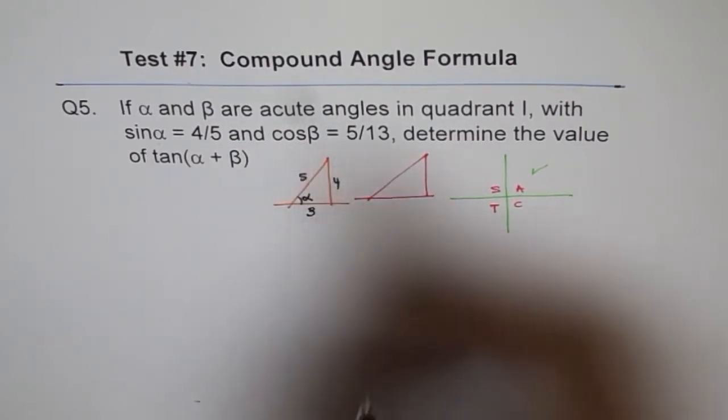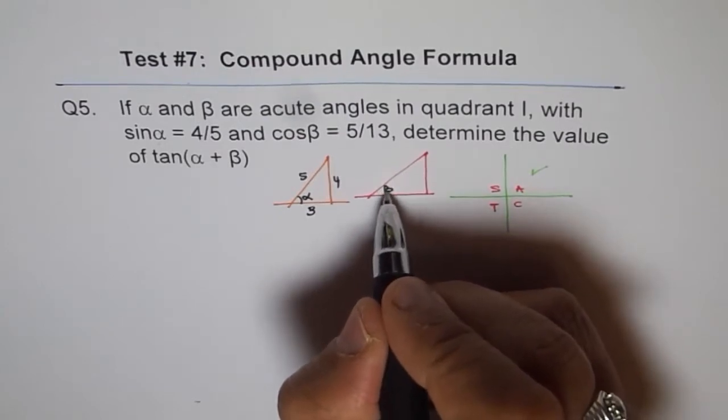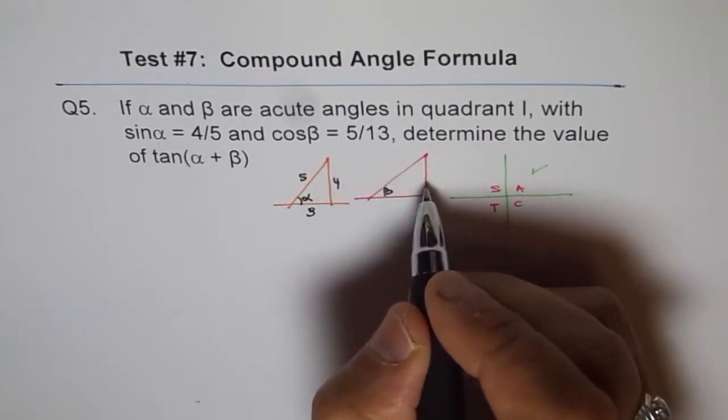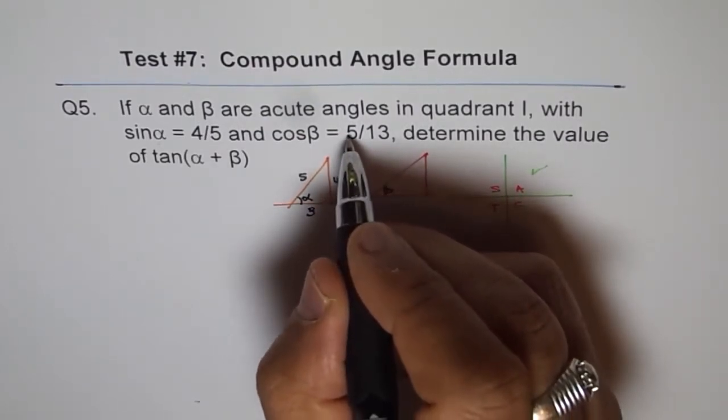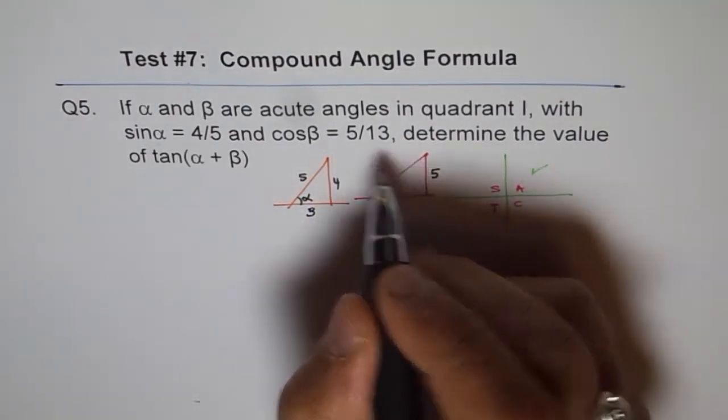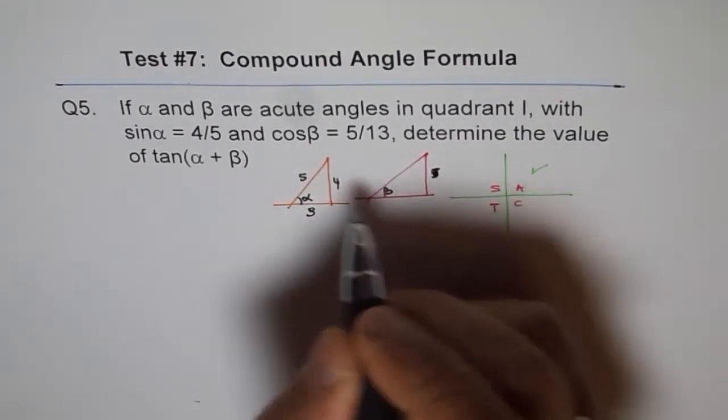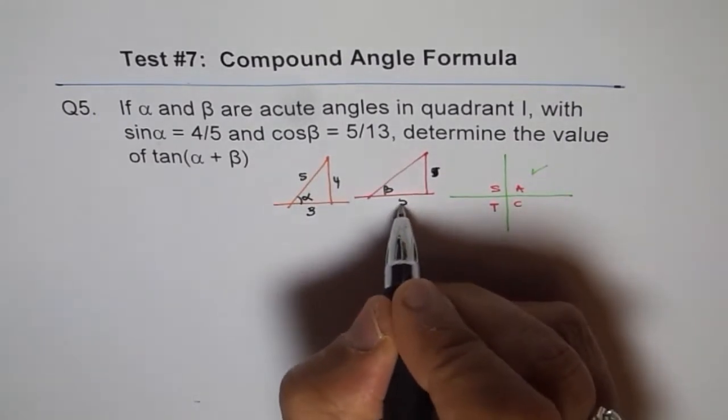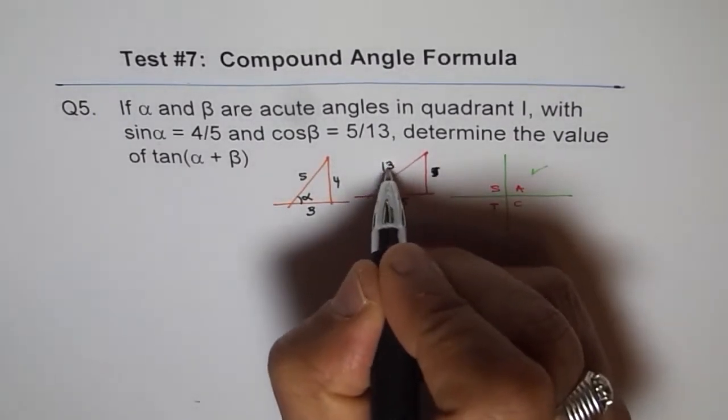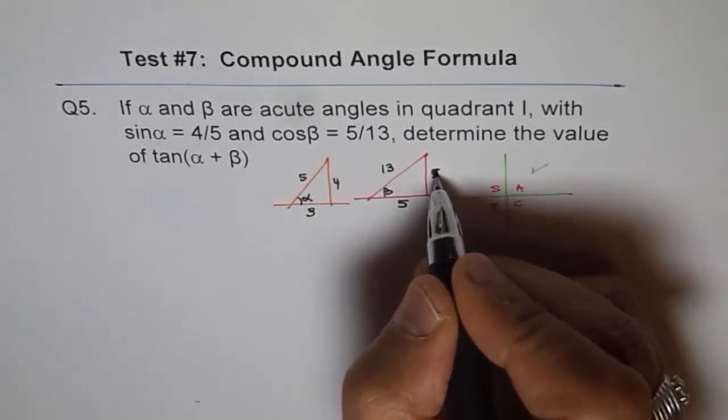Now for cos β, which is this angle, opposite is 13, sorry, opposite is 5 over 13. So opposite is 5. Oh, this is cos. Okay, sorry. So cos β, adjacent is 5, so you'll get 5 here and 13 here. Correct? You can always find the third side.